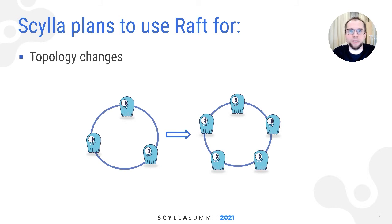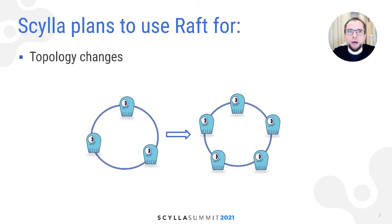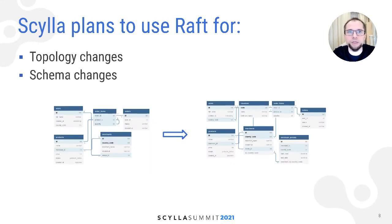Raft defines not only how a group makes a decision, but also the protocol for adding new members and removing members from the group. This lays a solid foundation for Scylla topology changes. They translate naturally to Raft configuration changes, assuming there is a Raft group for all of the nodes in the cluster, and no longer need a proprietary protocol. Schema changes translate to simply storing a command in the global Raft log and then applying the change on each node which has a copy of the log.